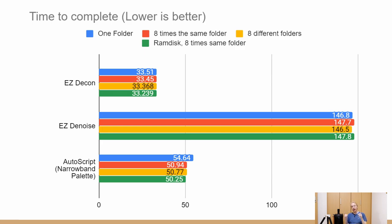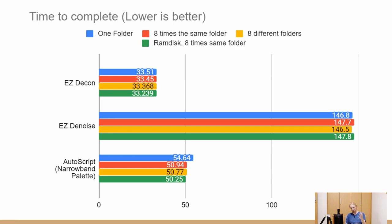Worth mentioning: my desktop computer uses a Samsung EVO NVMe M.2 drive, which is a very fast drive. That may be why I don't see improvements — if you have a hard disk, a very slow SSD, or especially an eMMC-type SSD common in many laptops, results might be very different and a RAM disk might make a lot of sense. However, if you have an NVMe drive, RAM disks don't provide a big performance improvement — but for your PC it might, so try it out and see.